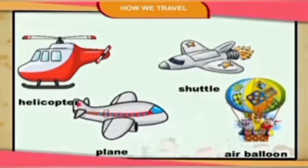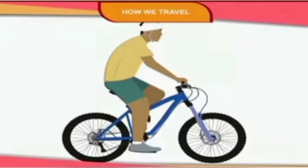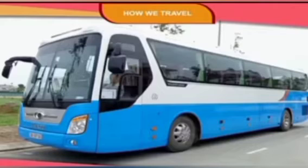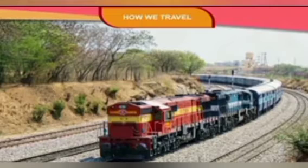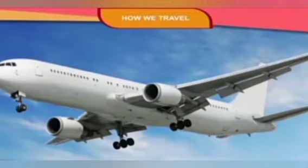Which vehicle is this? Can you identify these children? This is a cycle. This is a cycle rickshaw. We use these vehicles to travel for a short distance. Next is bus. This is a train. We use these for long distance. And aeroplane is used to travel very far distance within a short period.